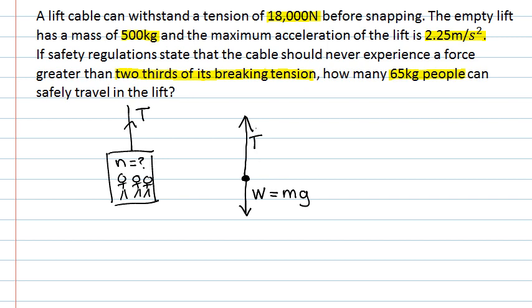So the maximum tension, T max, will occur when the lift is accelerating upwards with a vector acceleration of 2.25 meters per second squared, as stated in the question. So that's the maximum acceleration of the lift. And the maximum tension in the cable will happen when the lift is accelerating upwards with that maximum acceleration.